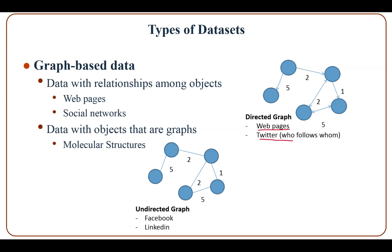Web pages can be described using a directed graph, while social networks can be described using both directed graphs and undirected graphs.